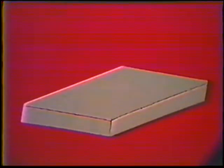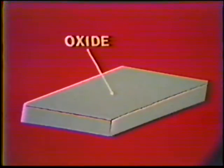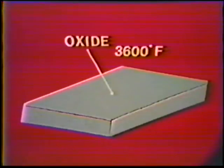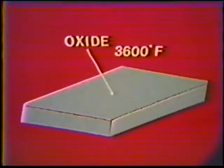Aluminum develops an oxide film on its surface when exposed to oxygen in the air. This oxide coating is harder than the aluminum itself. The melting point of the oxide is approximately 3,600 degrees Fahrenheit — almost three times that of pure aluminum, which melts at approximately 1,220 degrees Fahrenheit. The oxide must be partially removed before welding because of its high melting point and because it can mix with the molten weld pool.